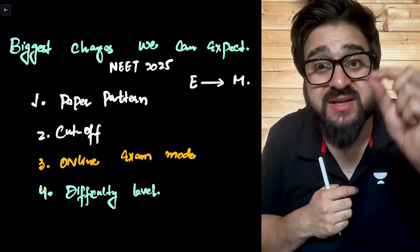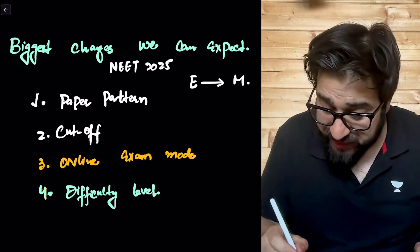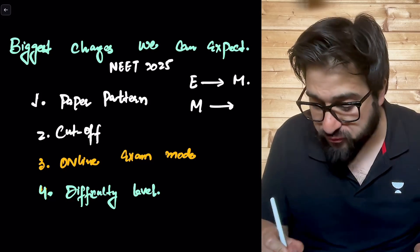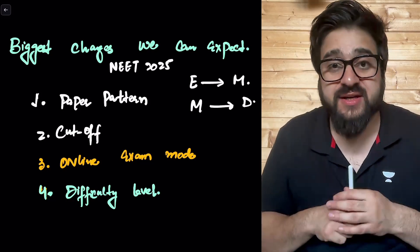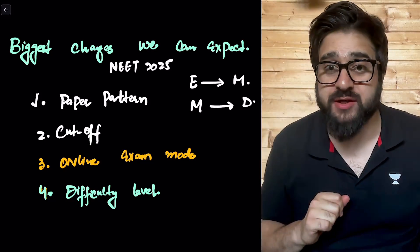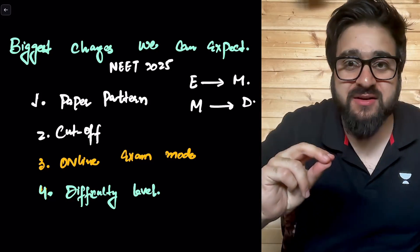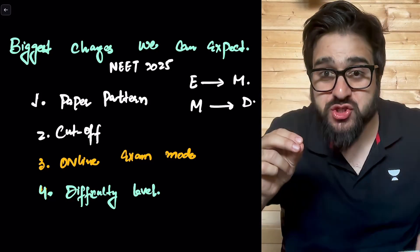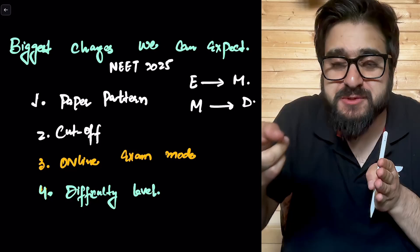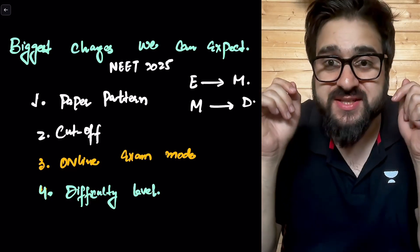These serious candidates who are getting 550 to 700 marks are increasing, so now we can expect the next paper will be from moderate to difficult. For that, they have to change the pattern.